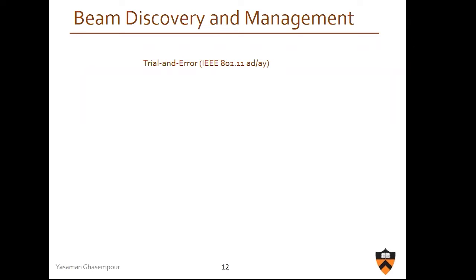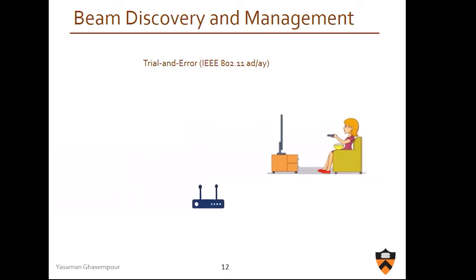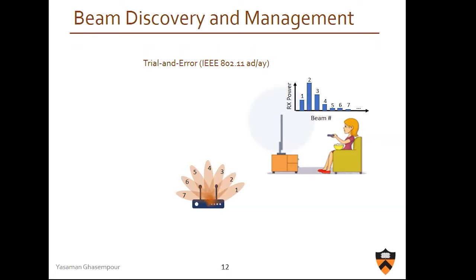I talked about the physical layer and gave an idea on how to do efficient frequency-controlled beam scanning. Now the question is: how do users find each other? How do they pinpoint the beams toward each other in an efficient, scalable, real-time manner? Let's look into 802.11ad and 802.11ay, because that's the closest sub-terahertz standard we have right now. The answer is: it's done in the most naive way you can imagine. You sweep through different beam directions, receive the SNR or power across beam IDs, and log into the beam that gives you the highest SNR. Then you sometimes repeat it on the receive side, and log into the best beam direction.